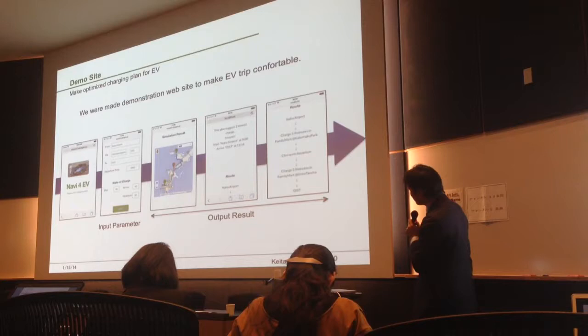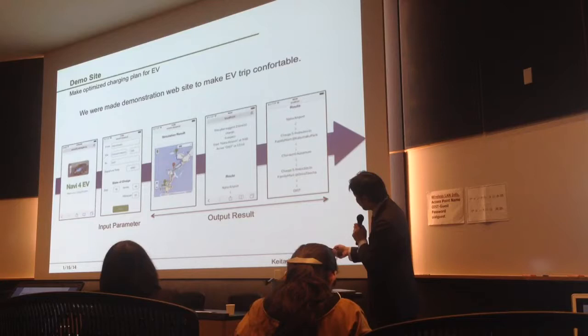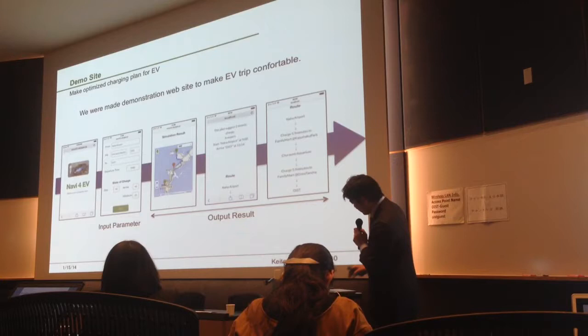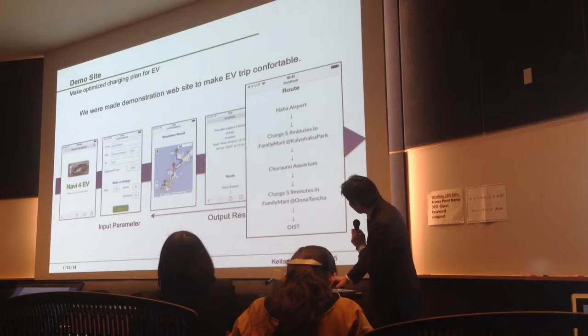We made a navigator system, also available on the website. This is an example of the result — it is called Navi for EV. If you set your starting location, destination, and other places to visit, the computer will suggest where to charge and where to drive. A demonstration test will be held in Okinawa.